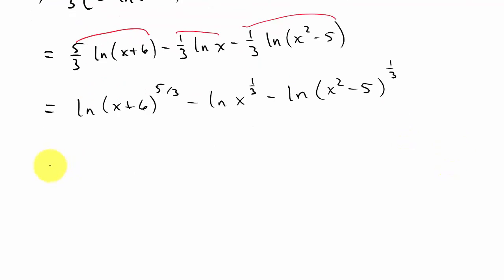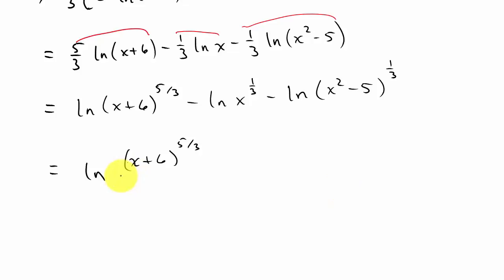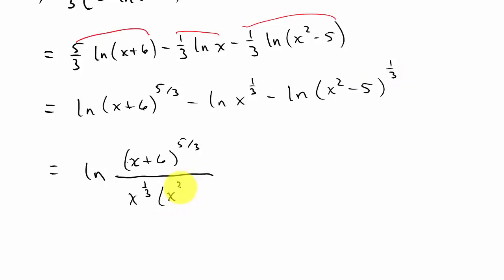Now we combine: this is going to be natural log of (x + 6) to the 5/3. Remember, anything with a minus in front goes to the denominator. So that's over x to the 1/3 — it has a minus in front, so x to the 1/3 goes to the denominator. And this one also has a minus in front, so (x² - 5) to the 1/3 also goes to the denominator.